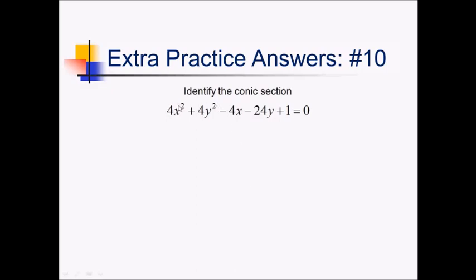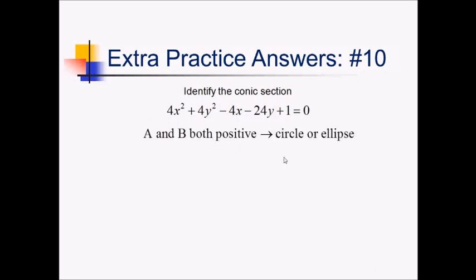On this problem, I've got two squared terms, so it's not a parabola. And I notice that these both have the same sign, so that means since these are both positive, or at least have the same sign, it's either a circle or an ellipse. Now I also notice that A and B, the coefficients of x and y squared, are equal to each other. Since I have both coefficients being the same, that means this has to be a circle.